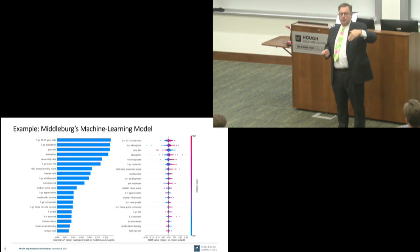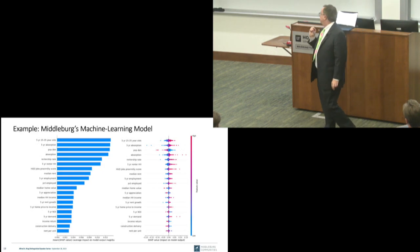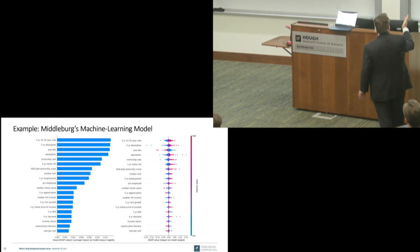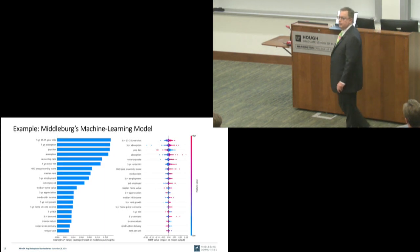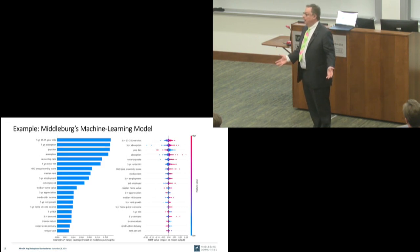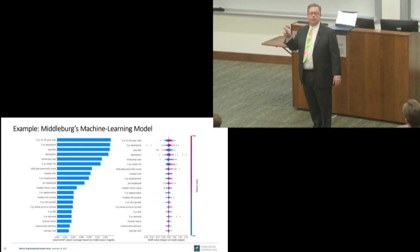One of the lower-importance variables is school quality. People in my company hate the idea that schools don't matter. But the data say schools don't matter much for location scoring in this part of the country.